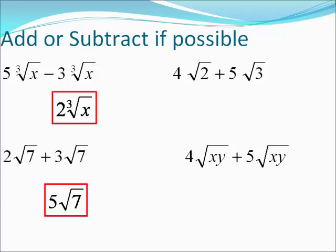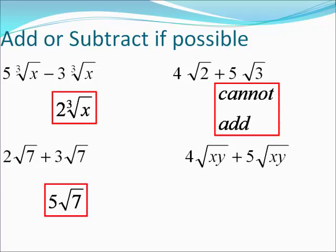On the top left corner, we have different types of numbers inside the roots — we cannot add those together. And the one below it, we have like terms: four plus five is nine, so nine square roots of xy.